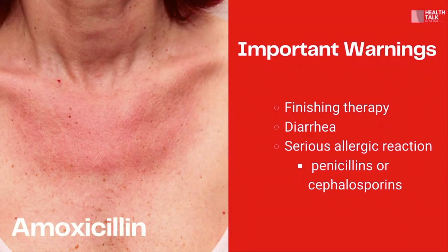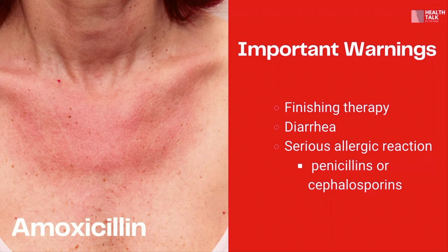Important warnings: amoxicillin is a semi-synthetic derivative of penicillin with a structure similar to ampicillin, but with better absorption when taken by mouth, thus yielding higher concentrations in the blood and the urine.